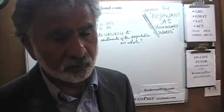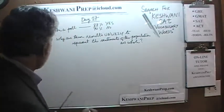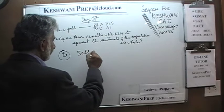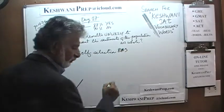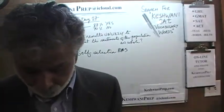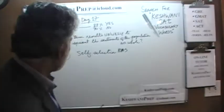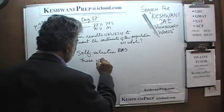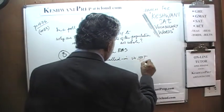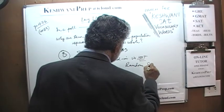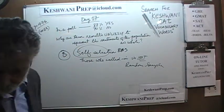Why can't we claim that the results obtained in this poll represent the view of the entire population of the country? The answer is very straightforward: because here we have what is known as a self-selection bias. Self-selection bias simply means that those who responded to the poll do not represent a random sample. Those who called in is not a random sample — there is a self-selection thing going on there.